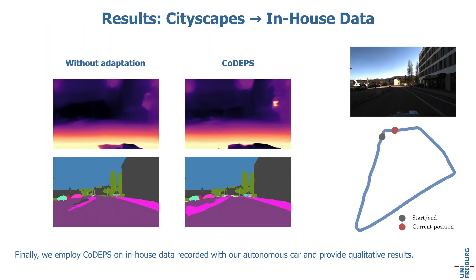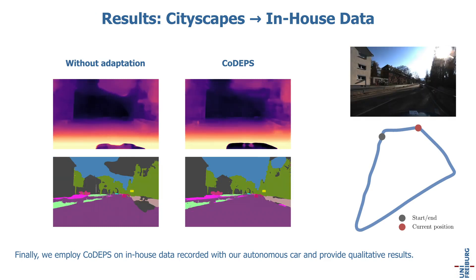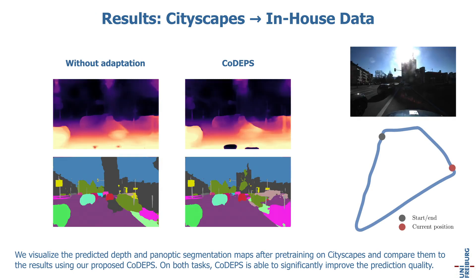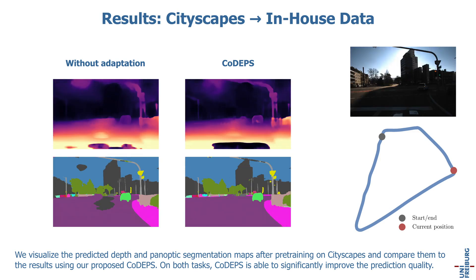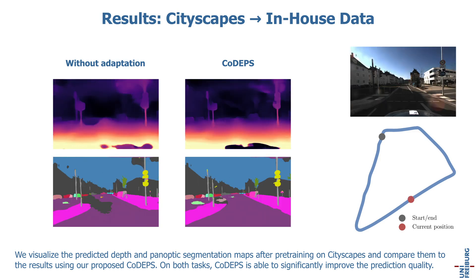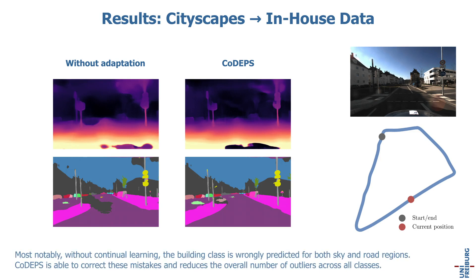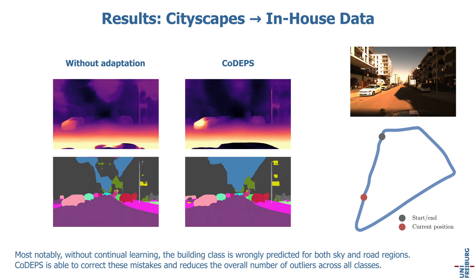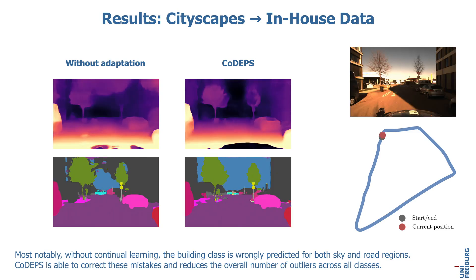Finally, we employ CodeApps on in-house data recorded with our autonomous car and provide qualitative results. We visualize the predicted depth and panoptic segmentation maps after pre-training on Cityscapes and compare them to the results using our proposed CodeApps. On both tasks, CodeApps is able to significantly improve the prediction quality. Most notably, without continual learning, the building class is wrongly predicted for both sky and road regions. CodeApps is able to correct these mistakes and reduces the overall number of outliers across all classes.